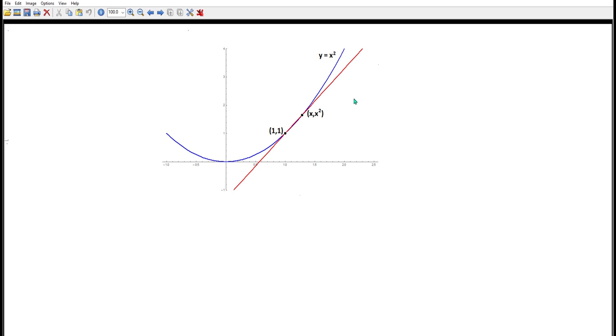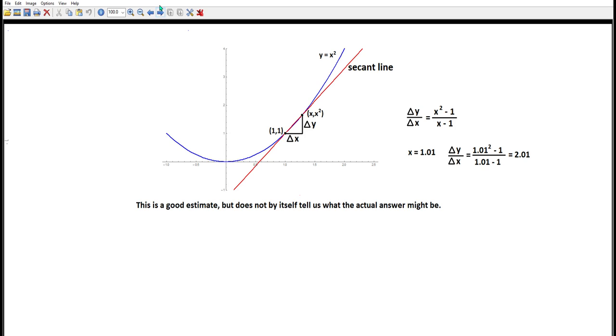Such a line which is not the tangent line is called the secant line and we calculate the slope by looking at delta y over delta x. Delta y is x² minus 1. Delta x is x minus 1. And what we did in the previous problem was we looked at x being 1.01. You do this calculation and the slope ends up being 2.01.